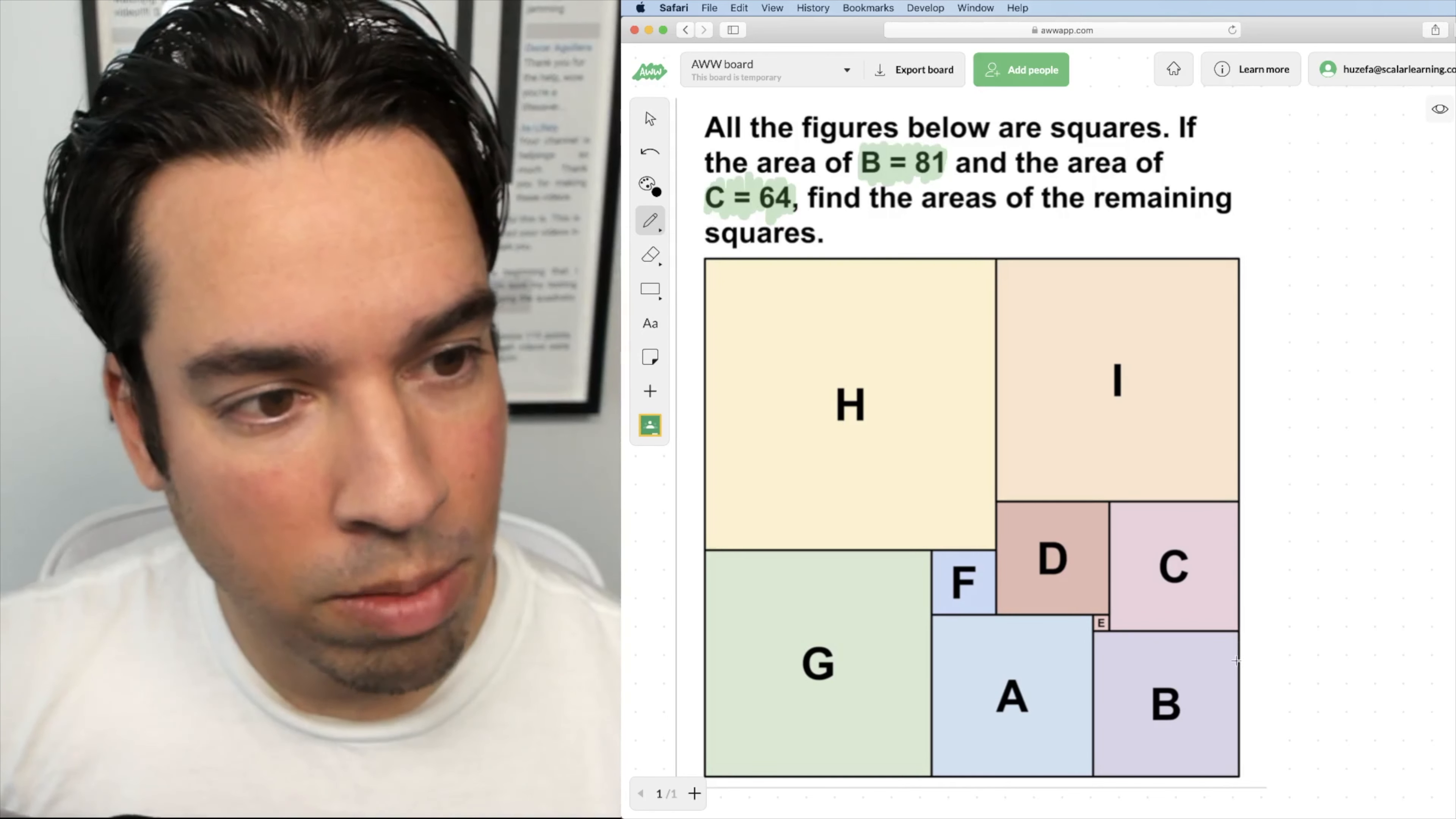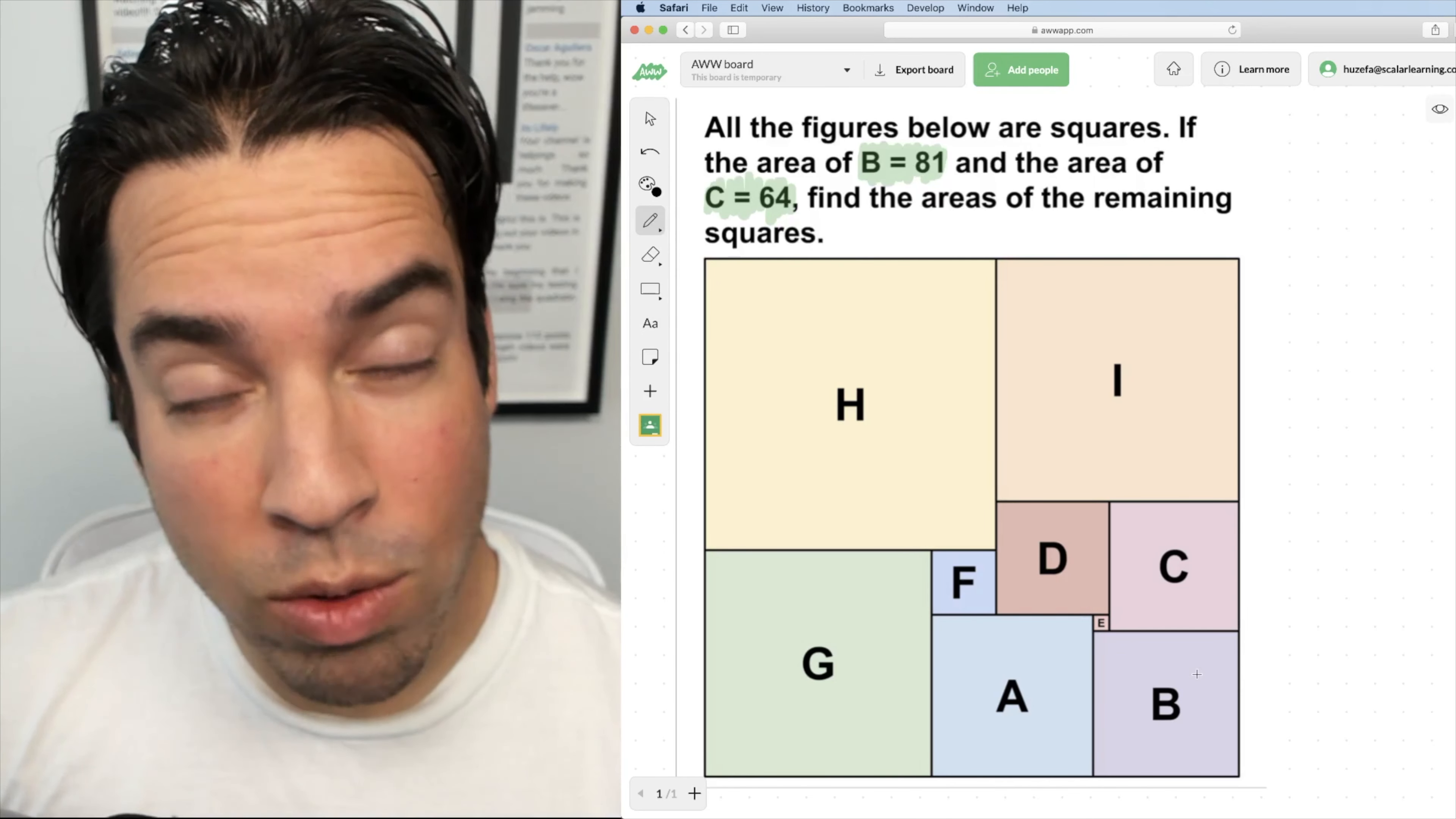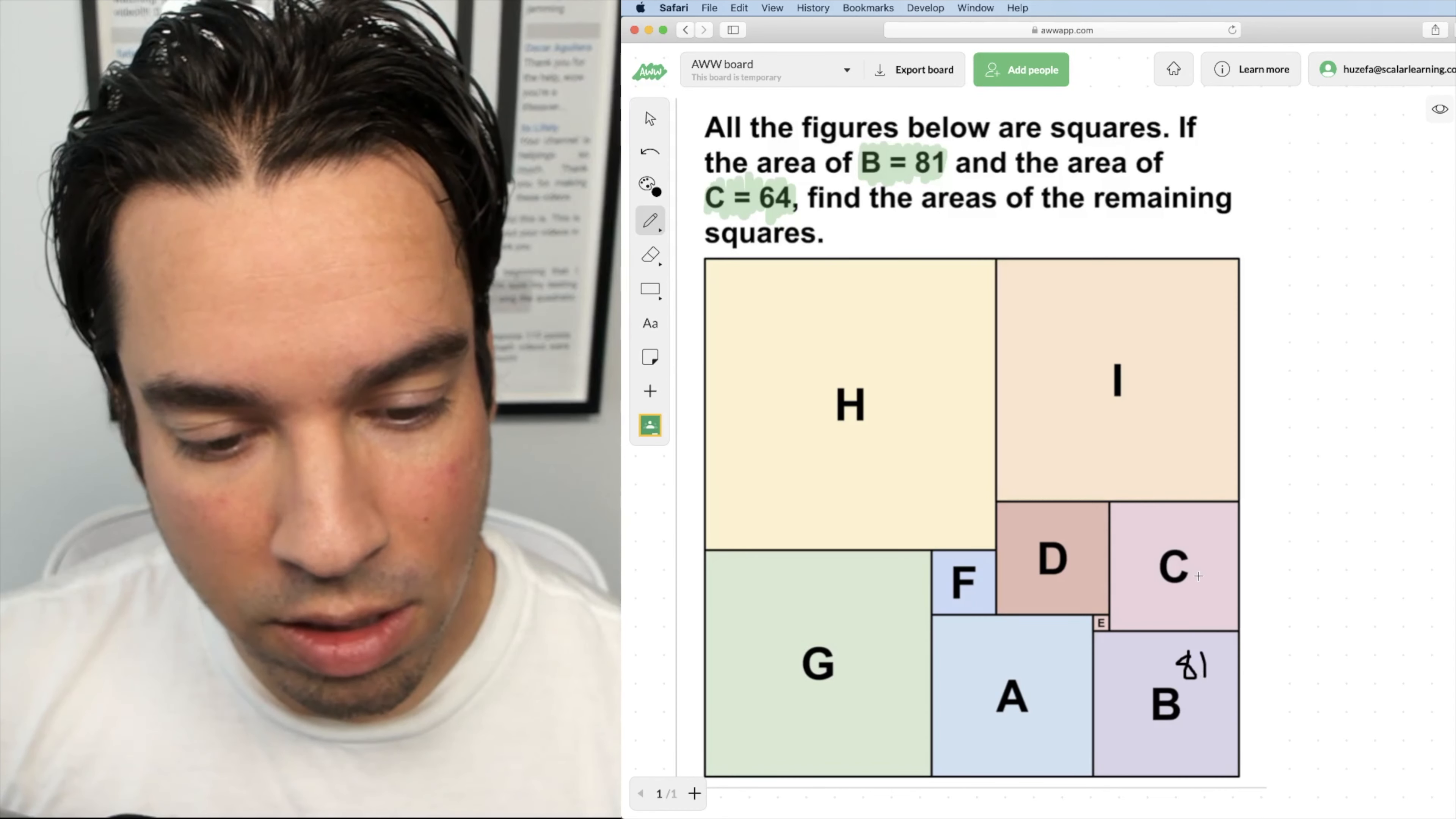All right, let's take it step by step. So first, if we know that B is 81, it has an area of 81, right? That's given and C is 64.